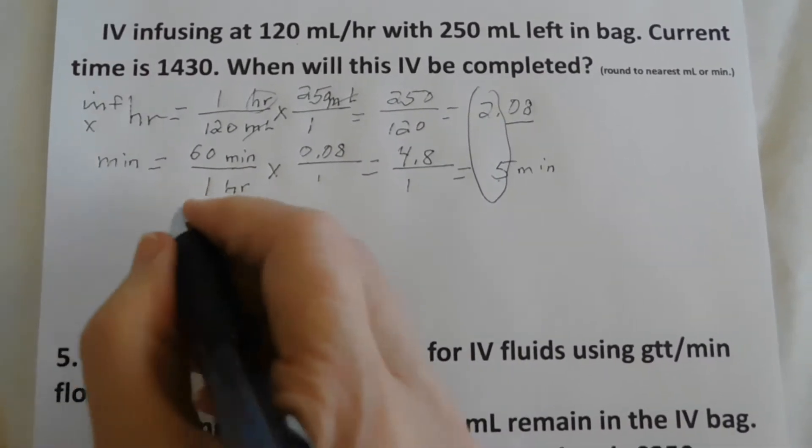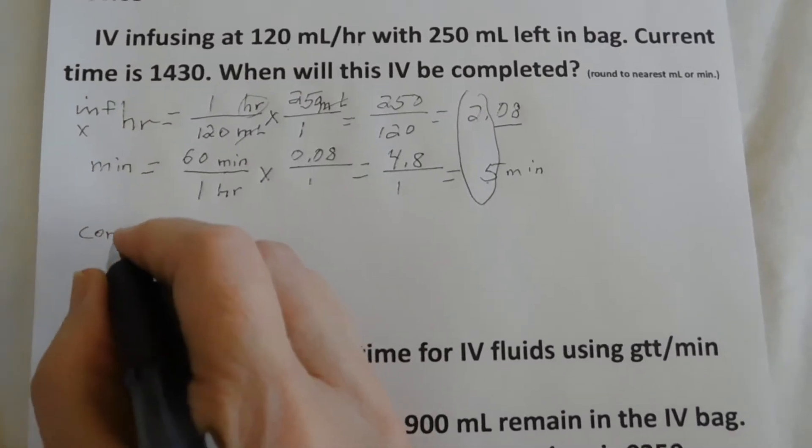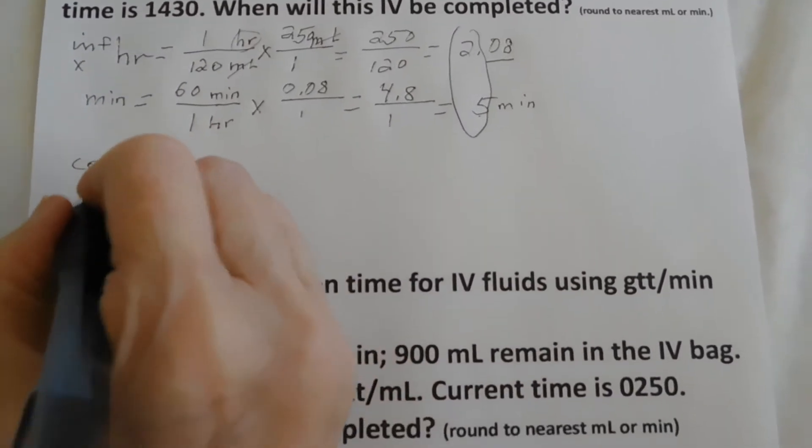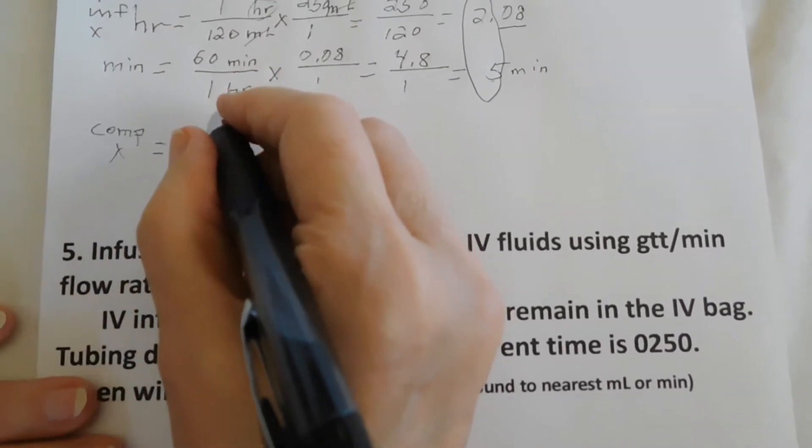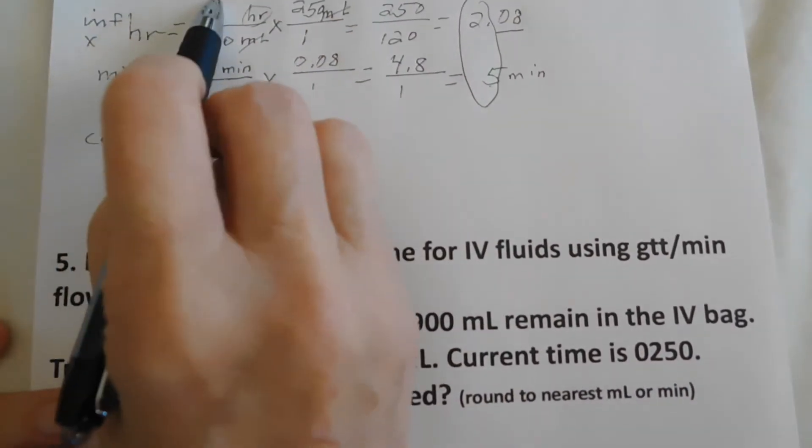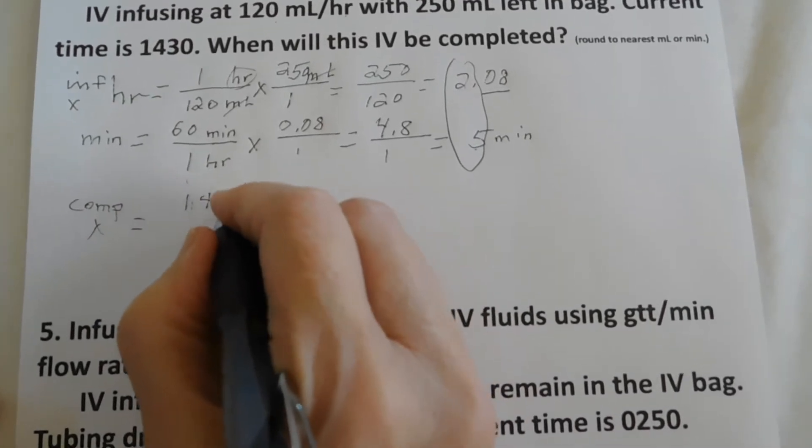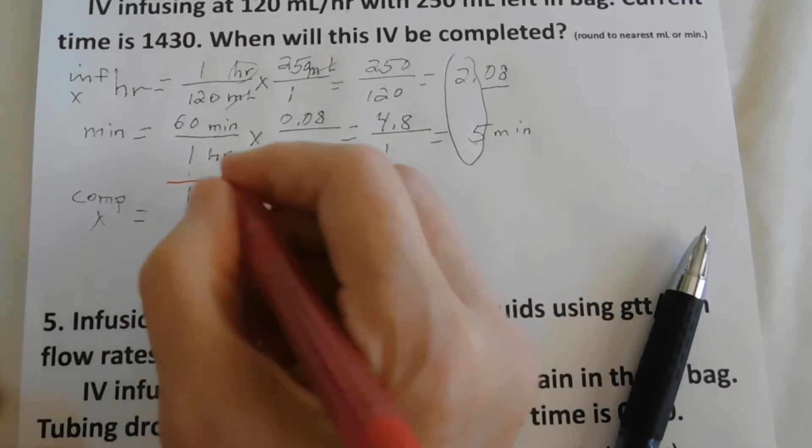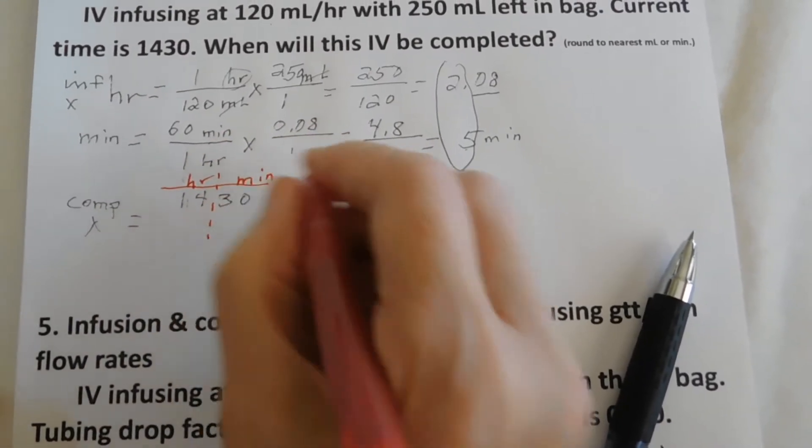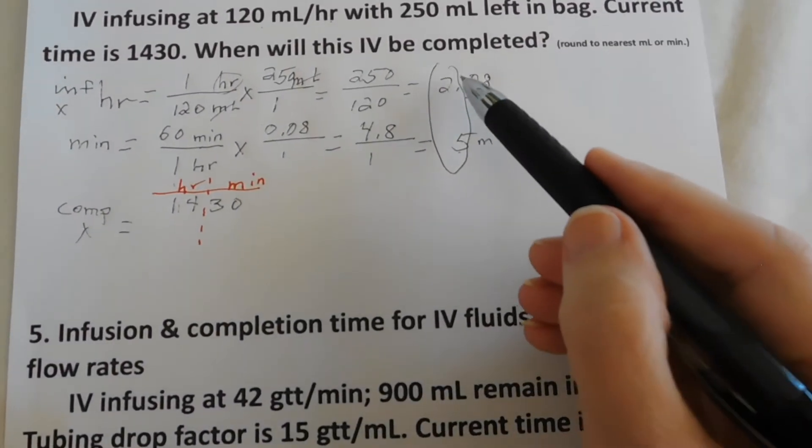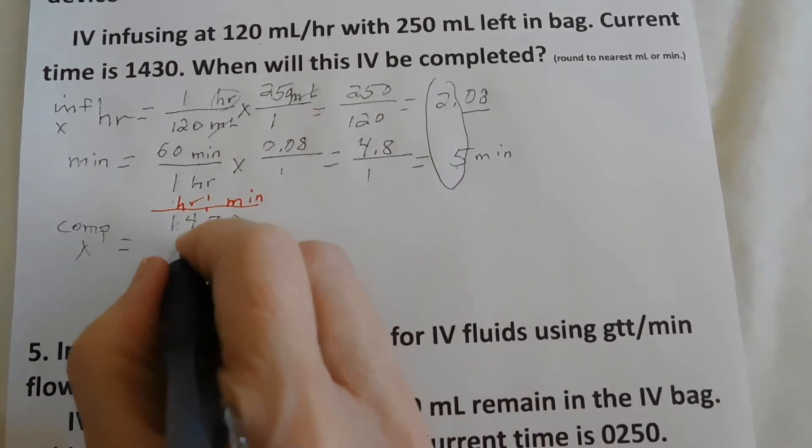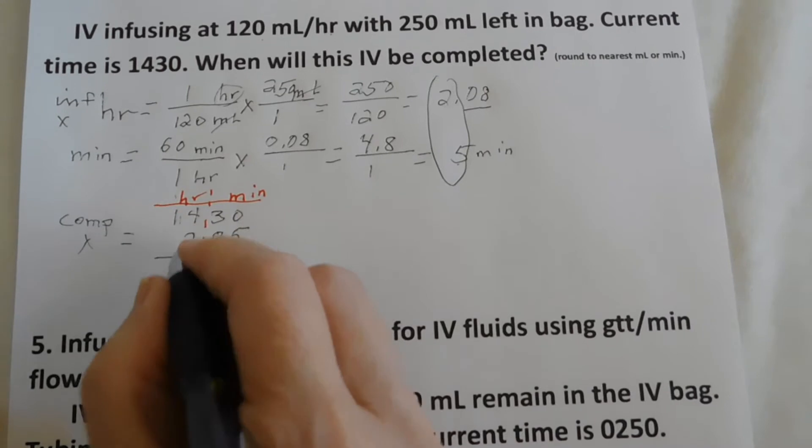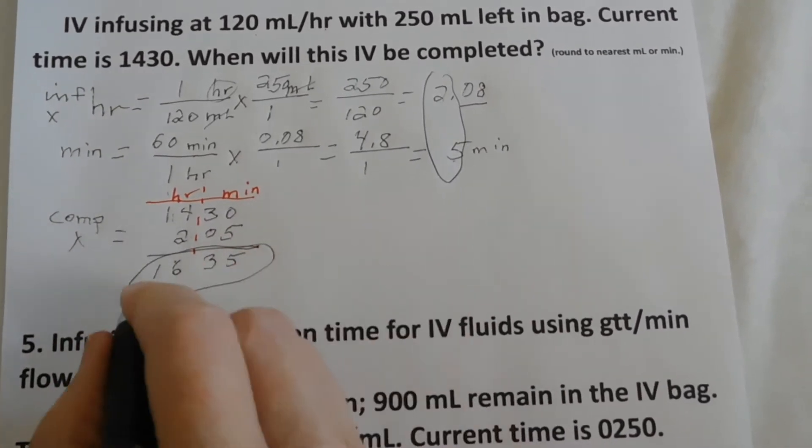Now we need to calculate our completion time. So completion time is the current time plus the infusion time. Completion time is current time plus infusion time. So completion time is going to equal. And we're going to need our current time first. Our current time we have in the problem is 14.30. And what I like to do is to separate the hours and minutes. So hour here, minutes here. So 14.30 plus our infusion time, which is 2 hours and 5 minutes. 2.05. We add these together. We get 35. And 14 and 2 is 16. So our completion time is 16.35.